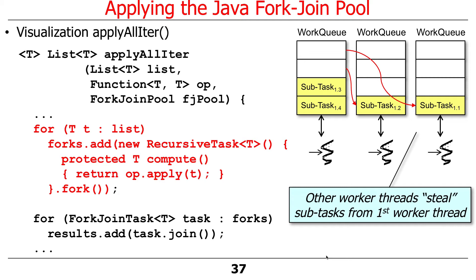Once things start going into that work queue, other threads in the pool that don't have anything in their work queues are going to say they don't want to just sit there idle — they want to do computation. So they're going to start stealing work from the end of the other thread's work queue. In the not-too-distant future, these other threads will start stealing work, and so the work will be more distributed evenly amongst the different threads.